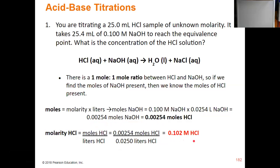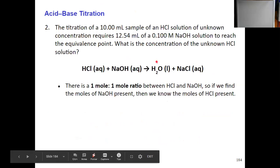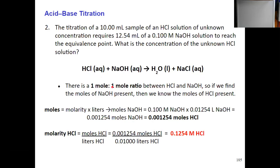Try this next one on your own. Again, the first thing you want to do is write out the balanced equation and note the one-to-one ratio between the acid and the base. So when we find the moles of NaOH present, we will also know the moles of HCl. The next step is: molarity times volume, 0.100 times 0.01254, which gives us the moles of NaOH.